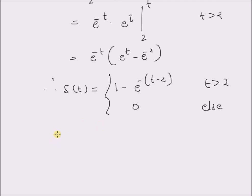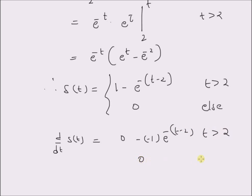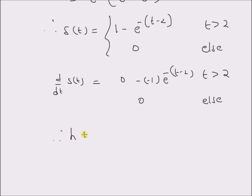Taking the derivative of the unit step response gives the impulse response. The derivative of s(t) yields 0 - (-1)·e^(-(t-2)) for t > 2 and 0 elsewhere. Therefore, h(t) = e^(-(t-2)) for t > 2, and 0 elsewhere.